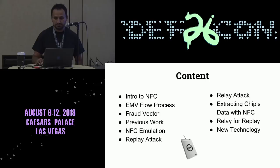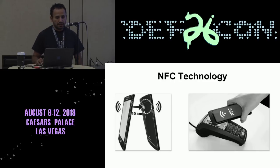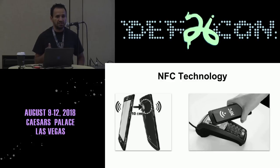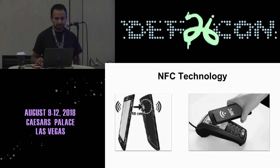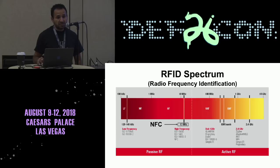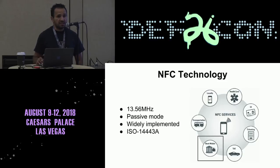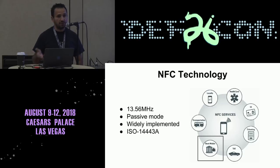NFC technology is part of a communication model where two devices need to be close to each other to make a transaction — we're talking about 10 centimeters. But that doesn't mean we can't amplify this signal to communicate devices at longer range. NFC is in the high frequency RFID spectrum, implementing passive technology. Payment systems implement 13.56 MHz passive mode, which needs another device to boot up the other — for example, a cell phone or smart card, credit card. Many devices implement NFC and use the ISO 14443A standard. In this particular case, we're going to talk about bank systems.